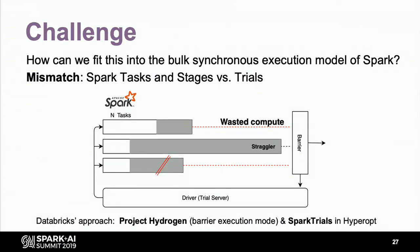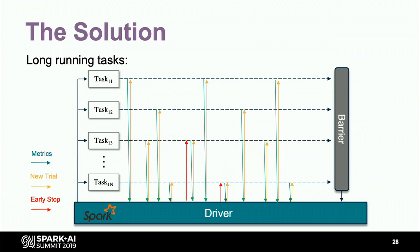How can we fit this into Spark? There's clearly a mismatch between Spark tasks and stages and the conception of trials in hyperparameter optimization. An additional problem could be stragglers — what if your model doesn't converge? Databricks' approach for the inner loop is Project Hydrogen for distributed deep learning and a new addition to Hyperopt called Spark Trials. We are doing things a bit differently. Our solution: we block the executors with very long-running tasks throughout the experiment runtime. We allocate each executor a single task and add communication between the tasks and the driver, which may be on a different machine.